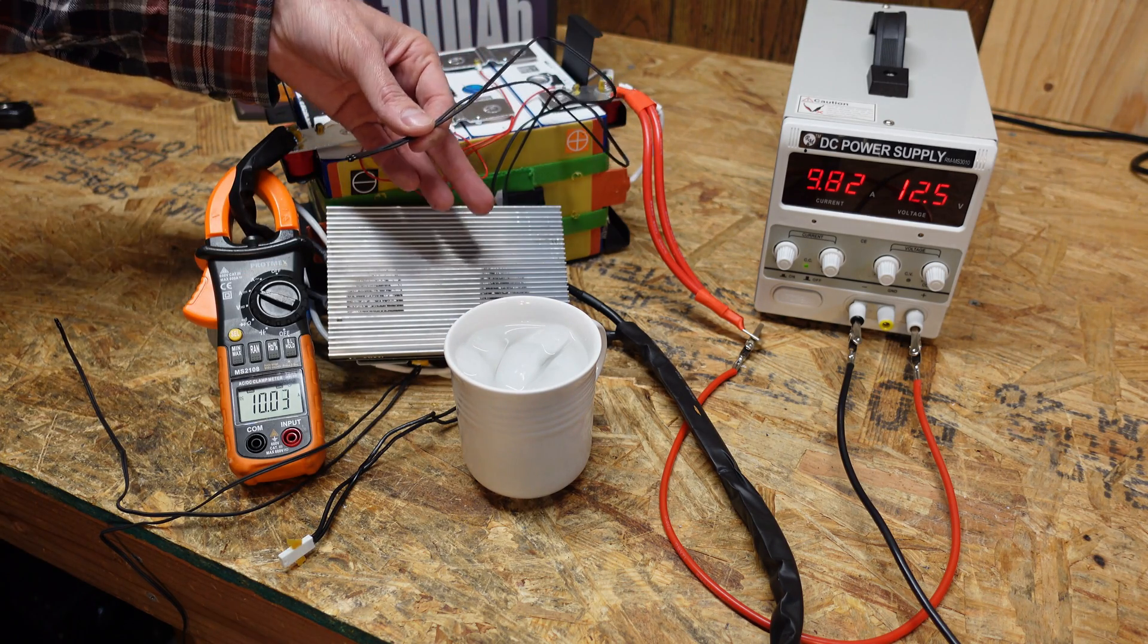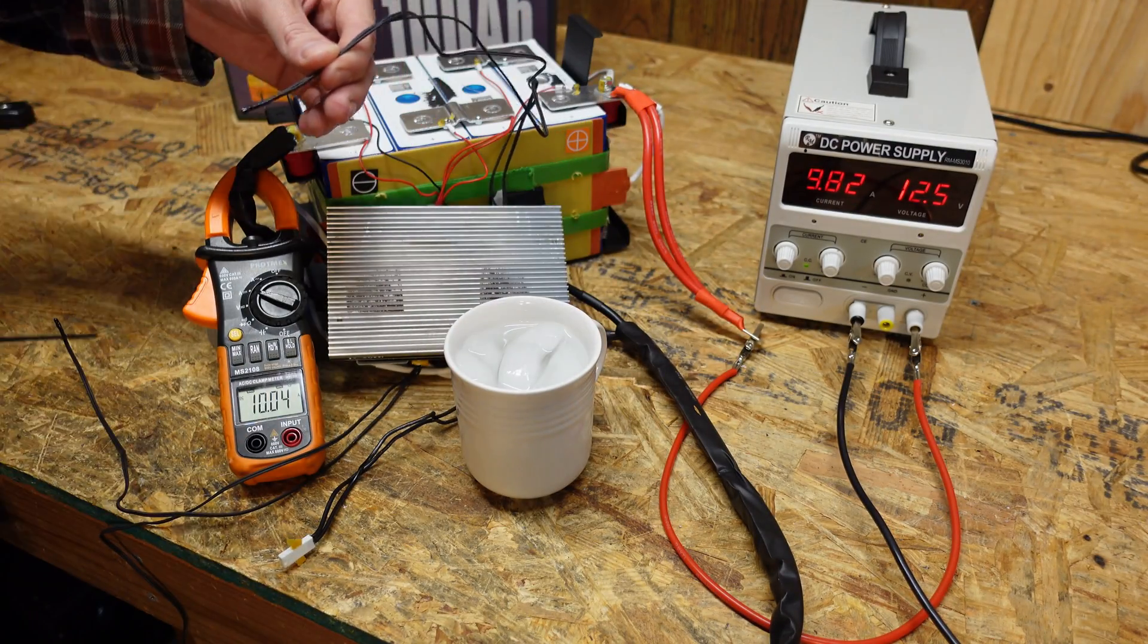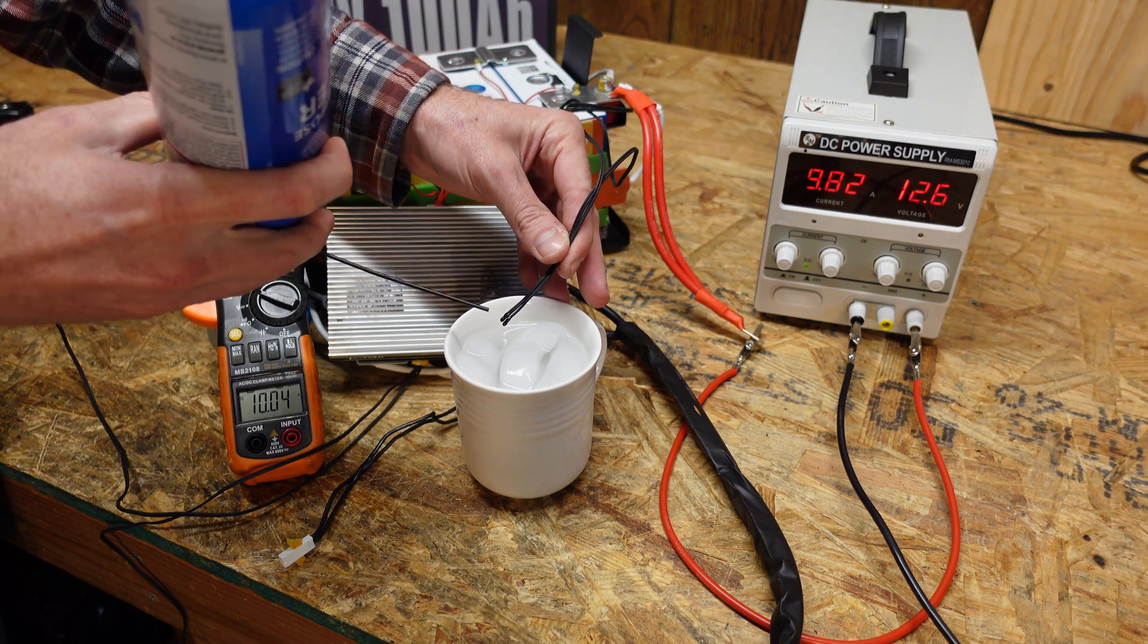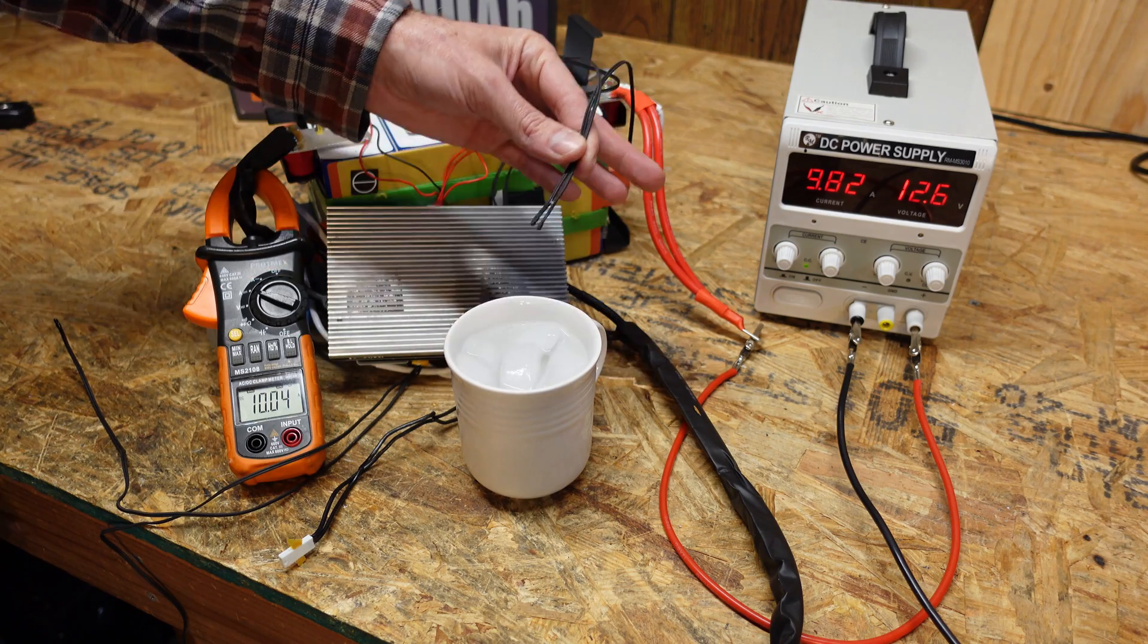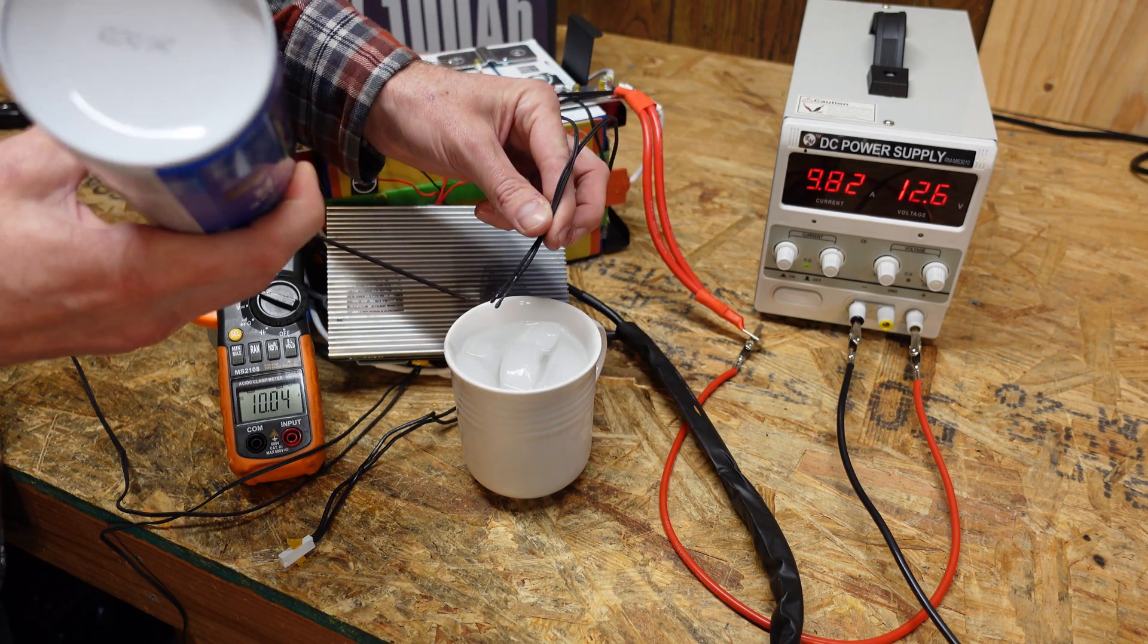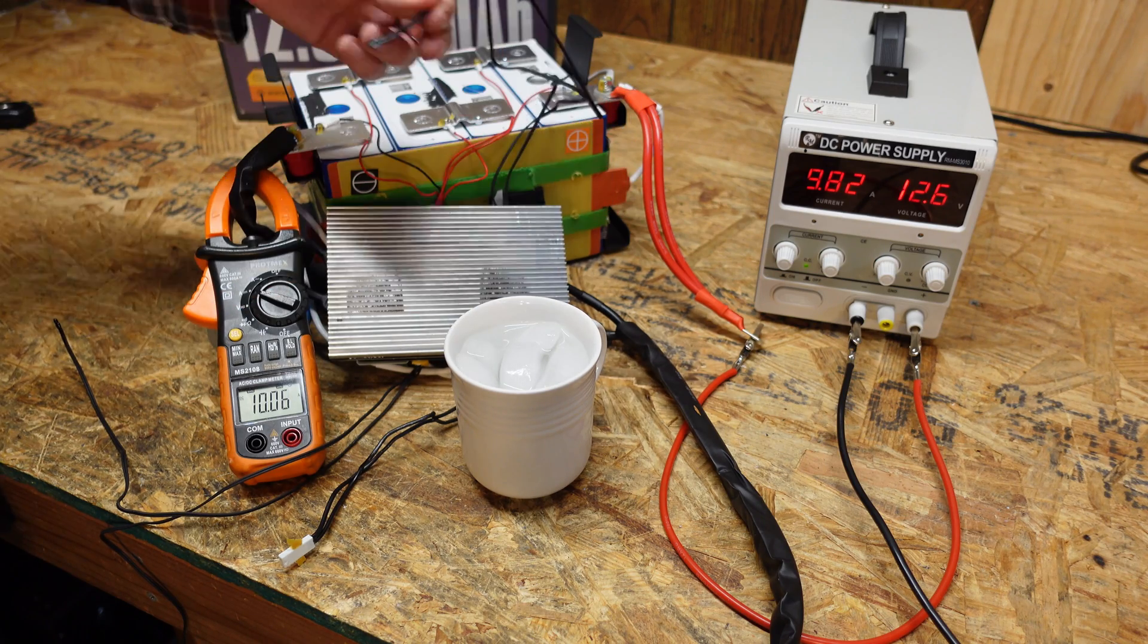So I thought okay maybe my water is just not cold enough because we've had that happen before where the BMS is set to something like negative 5c. So then I got my computer duster spray here which has been able to drop some of these sensors down to like negative 20 negative 30 celsius. So if I spray both of these sensors here our battery is still charging. We're at 9.8 and we're at 10.